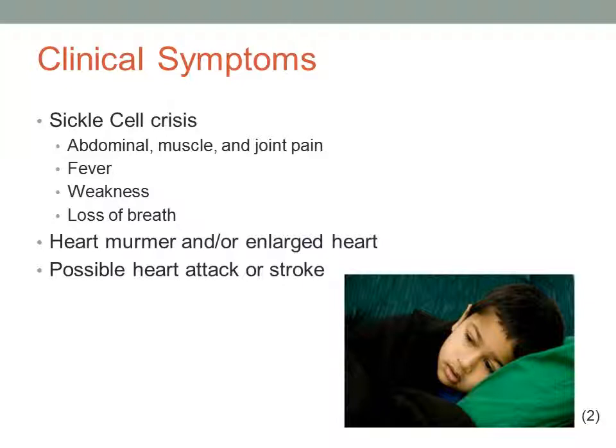Pain episodes occur when the malformed sickle cells occlude small vessels like capillaries, preventing areas from receiving adequate oxygen. This hypoxic state is known as a sickle cell crisis. Patients may complain of abdominal, muscle, and joint pain, as well as fever, malaise, and dyspnea. These patients also often present with heart murmurs and or enlarged hearts.